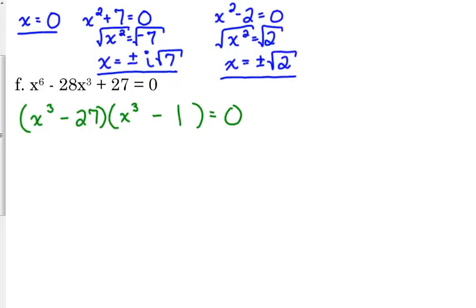Both of these can be factored further. Because x cubed minus 27 is the difference of perfect cubes. So we've got x and 3. So x squared, 3x and 9. Same, opposite, always positive.